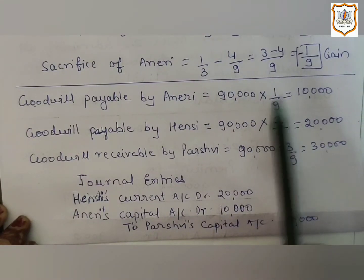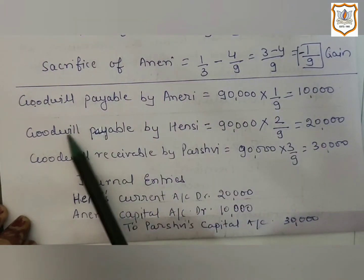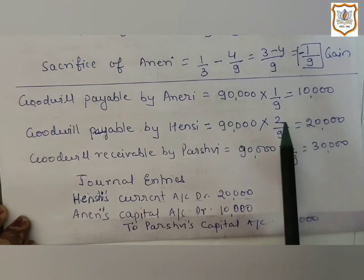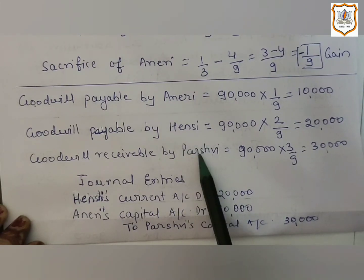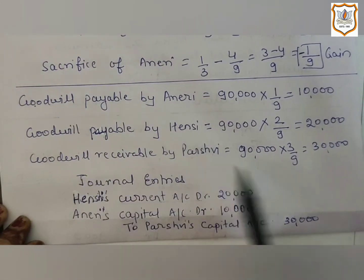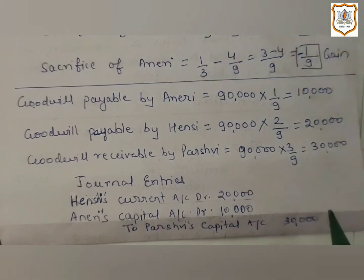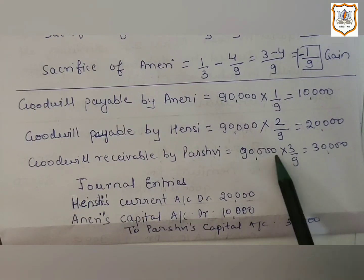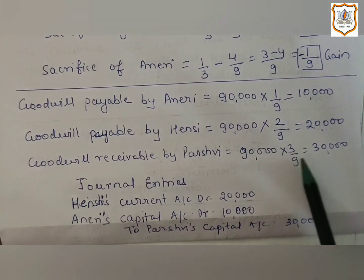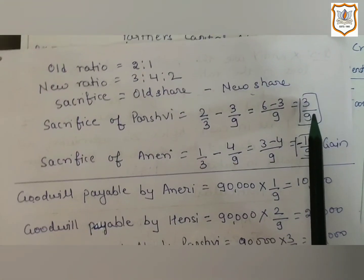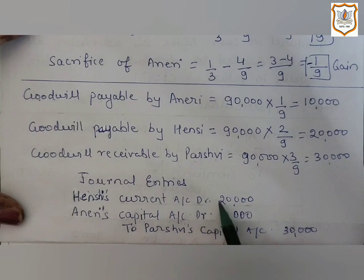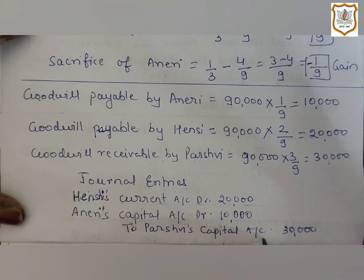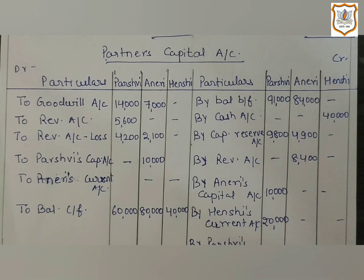Goodwill payable by Aniri: 90,000 × 1/9 = 10,000. Goodwill payable by new partner Hansi: 20,000. Goodwill receivable by Parswee (since only she is sacrificing): 90,000 × 3/9 = 30,000. The journal entry for goodwill will be: Hansi's Current Account debit 20,000; Aniri's Capital Account debit 10,000; to Parswee's Capital Account 30,000.